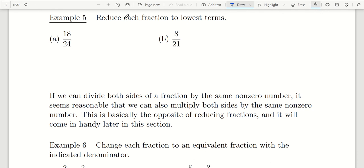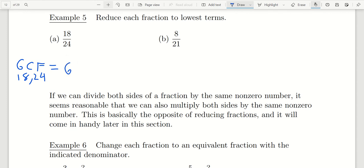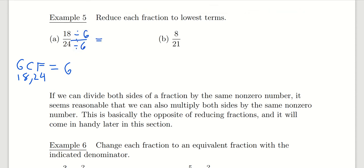Let's take a look at example 5 — we want to reduce each fraction to lowest terms. The first one is 18 over 24. The best way is to find the greatest common factor of those two numbers. For 18 and 24, their greatest common factor is 6, which means we divide both numerator and denominator by 6. Six goes into 18 three times, and 6 goes into 24 four times, giving the answer 3 fourths.